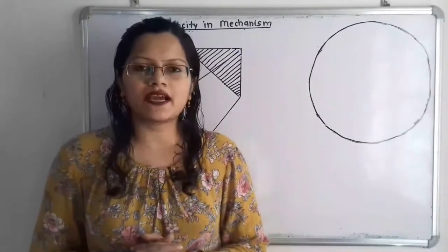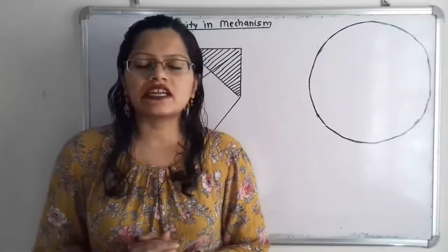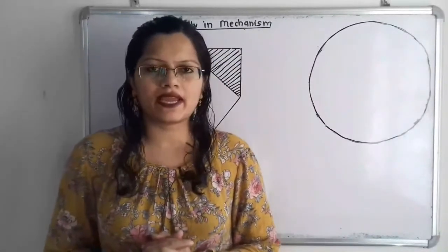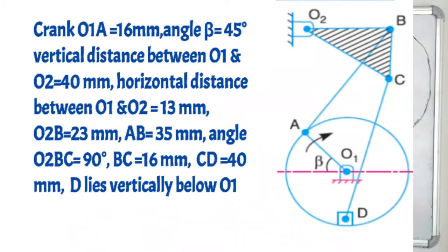Hello friends, this is Priyanka. Today we are going to solve a problem on instantaneous center for a given mechanism. If we observe the diagram, some dimensions are given. Here a swing needle bar mechanism is given, and the dimensions are in the range of 10 millimeter to 40 millimeter, so we will take a scale where 10 millimeter is equal to 5 centimeter distance.